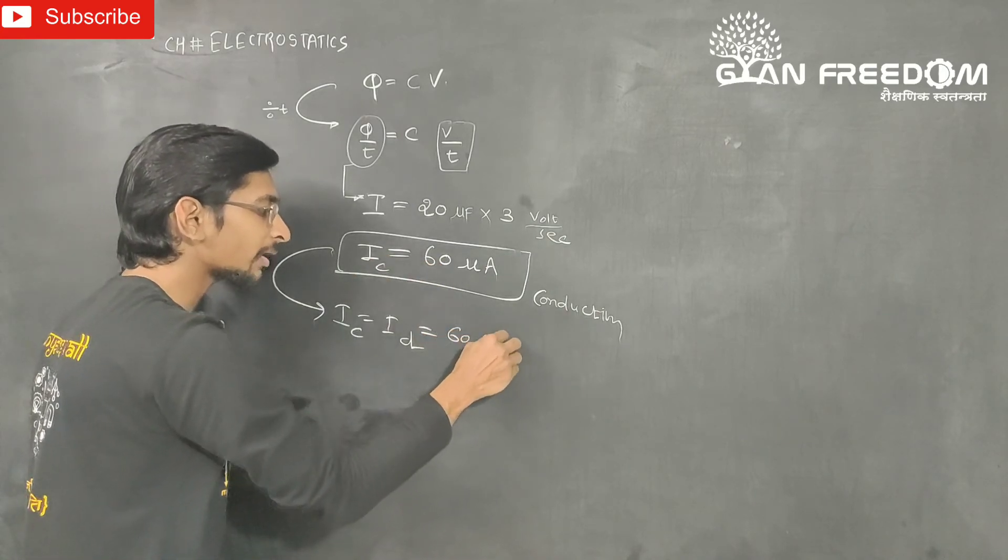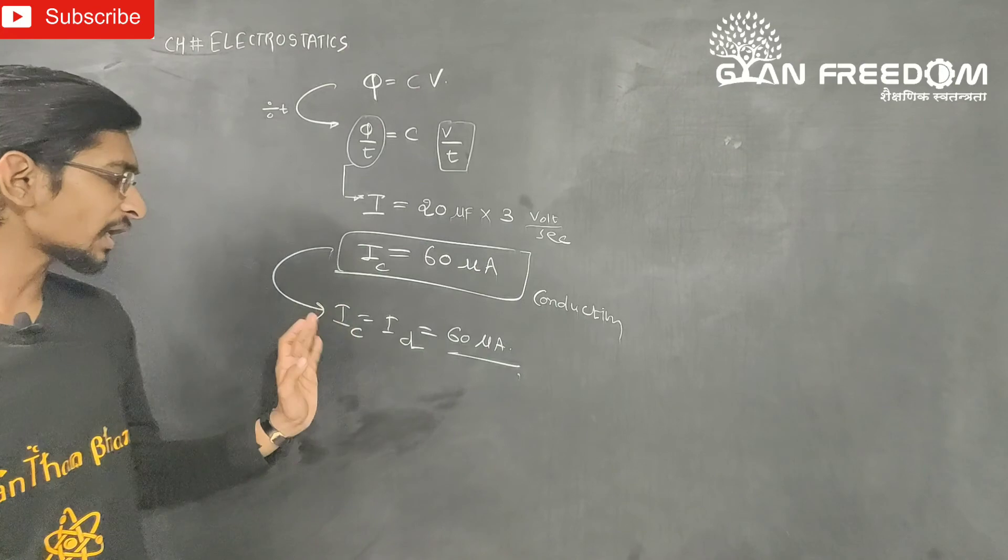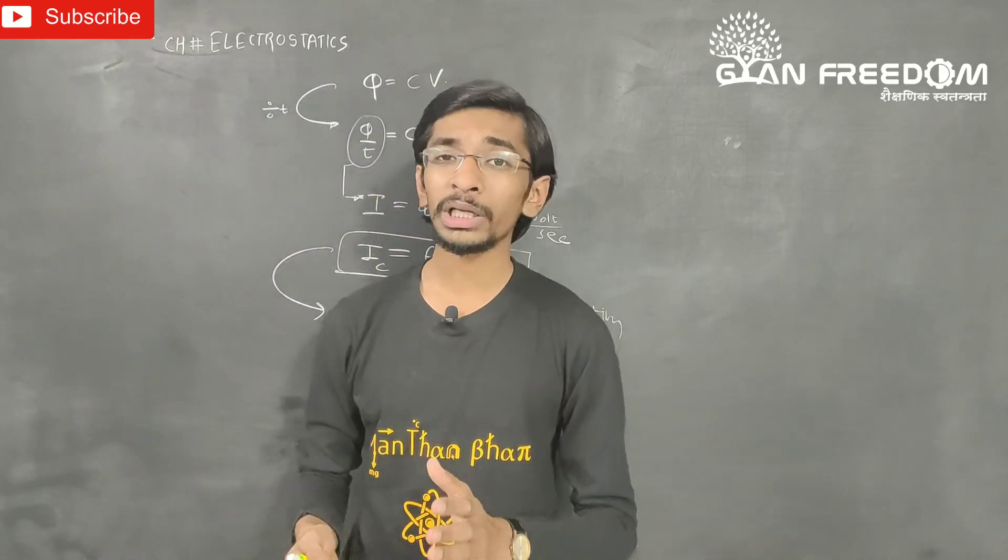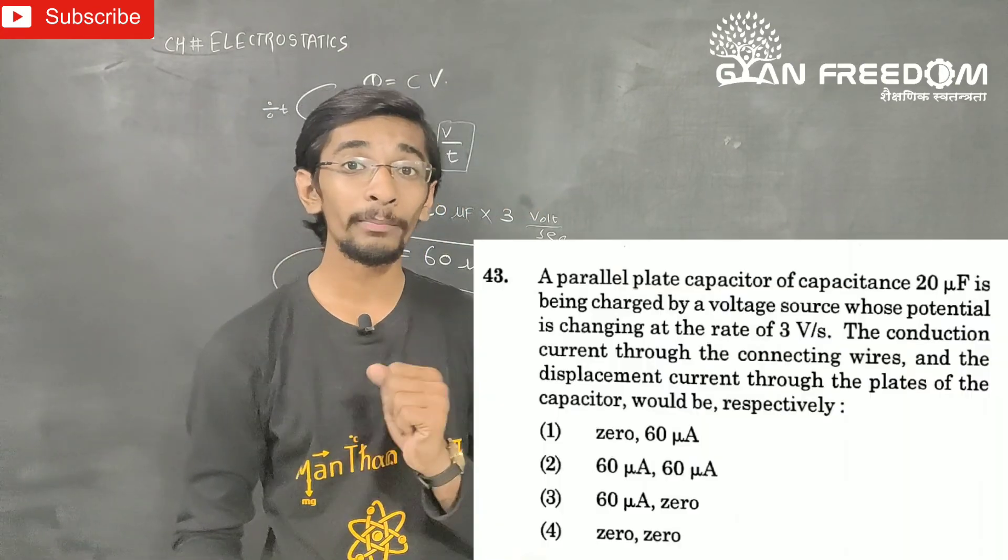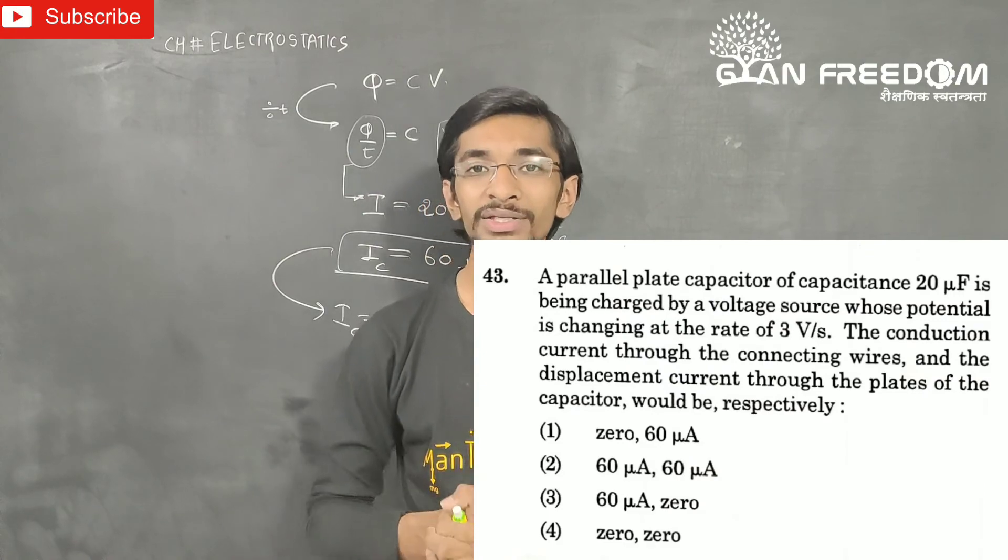60 micro ampere. So conduction current is 60 and displacement current is 60 micro ampere. Option 2 is the answer.